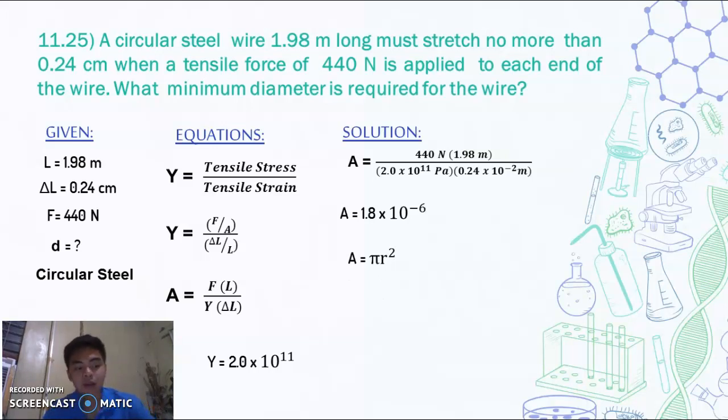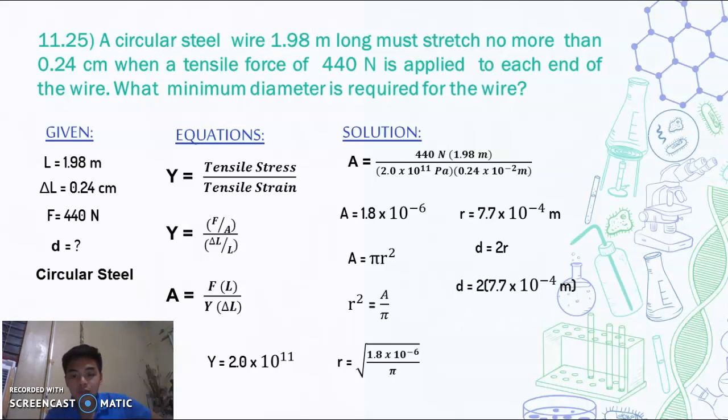The area is equal to pi r squared. So we just need the radius in order to get the diameter. So r will be equal to square root of A over pi, which is the square root of 1.8 times 10 to the negative 6 meter squared all over pi, which will give us a radius of 7.7 times 10 to the negative 4 meters. And diameter is equal to 2 times radius, which gives us a diameter of 1.5 millimeters.